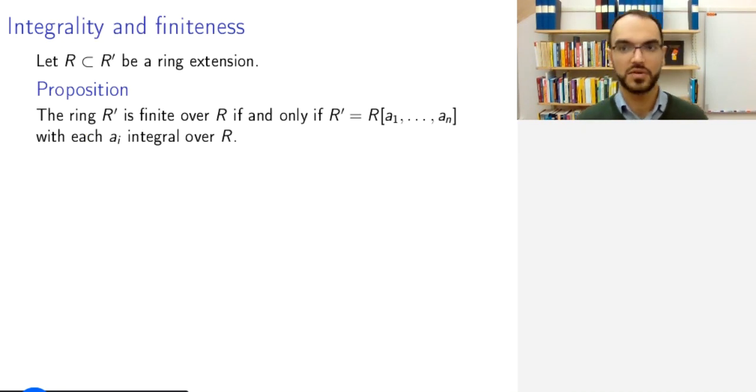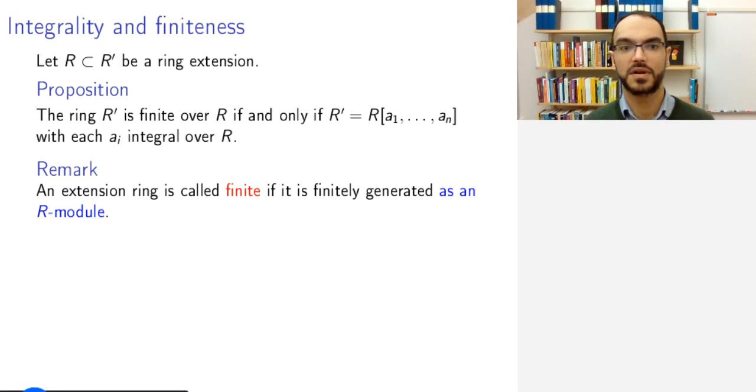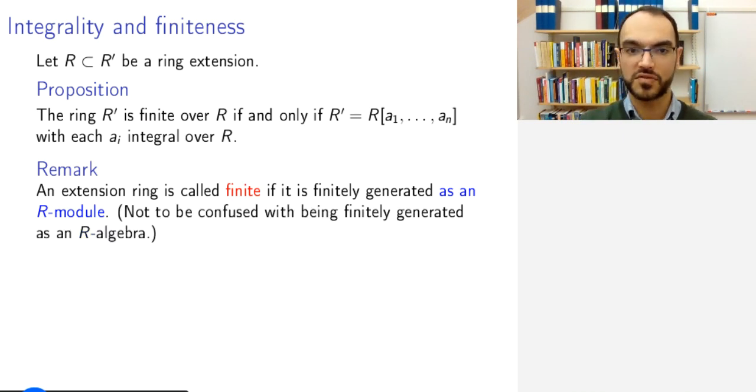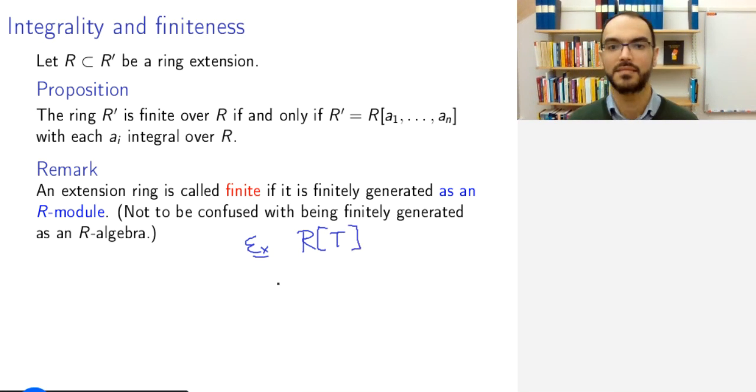And in general, we can prove the following statement, that an extension ring is finite over R if and only if it is generated as an R-algebra by integral elements. What do we mean by finite? It is already finitely generated as an algebra, but what we mean by finite is finitely generated as an R-module. This is stronger than being finitely generated as an R-algebra. As an example, or rather a non-example, consider the polynomial ring, even in one variable. This is finitely generated as an algebra, the generator is t.